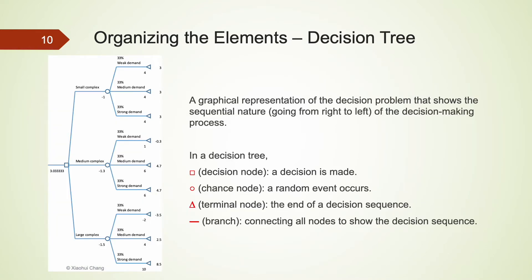A more flexible way of organizing a decision problem is to construct a decision tree. A decision tree is a graphical representation of the decision problem, showing the sequential nature of the decision-making process.